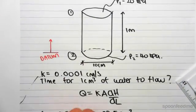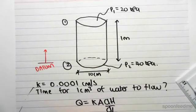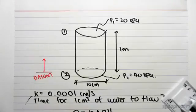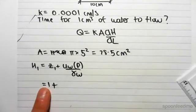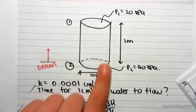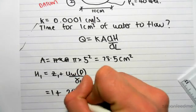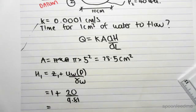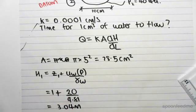So at point 1, which is up here, we know head is Z1 plus the pore water pressure divided by the unit weight. Okay, the elevation Z1 is 1 meter. So it equals 1 plus the pressure being given as 20 kilopascals. So that's 20 on 9.81. Okay, so 20 divided by 9.81 plus 1 is 3.04 meters.